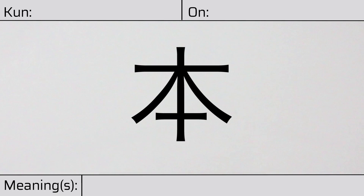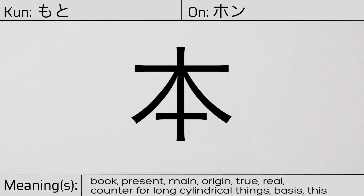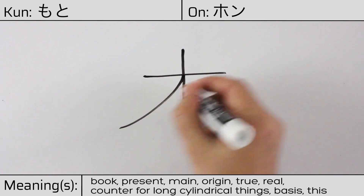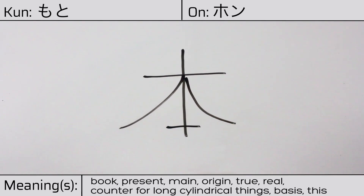Welcome to this lesson on Japanese kanji. Today, we'll be discussing this character. This kanji has a kunyomi or Japanese reading of moto, and it has an onyomi or Chinese reading of hon. This character has the meanings book, present, main, origin, true, real, basis, or this. Here is the stroke order.